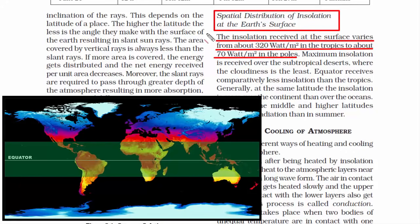The tropical region is the area around the equator, between the Tropic of Cancer in the northern hemisphere and the Tropic of Capricorn in the southern hemisphere.